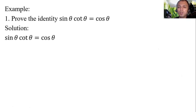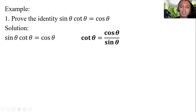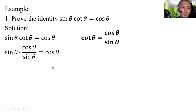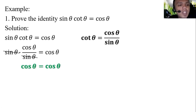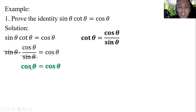To prove, we substitute the trigonometric identities. First, replace cotangent theta with cosine theta over sine theta. Then we have sine theta times cosine theta over sine theta equal to cosine theta. Cancel out the sine theta, and we have cosine theta is equal to cosine theta. Therefore, the expression sine theta cotangent theta is equal to cosine theta is true.